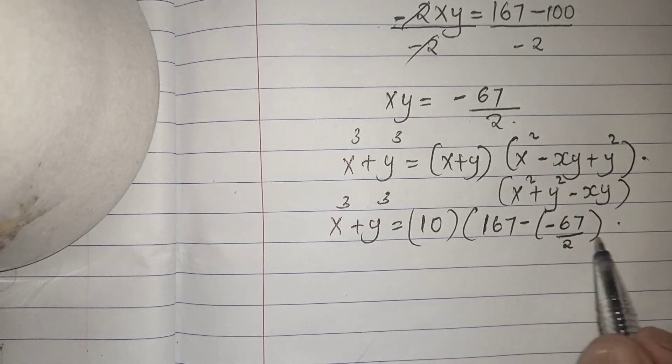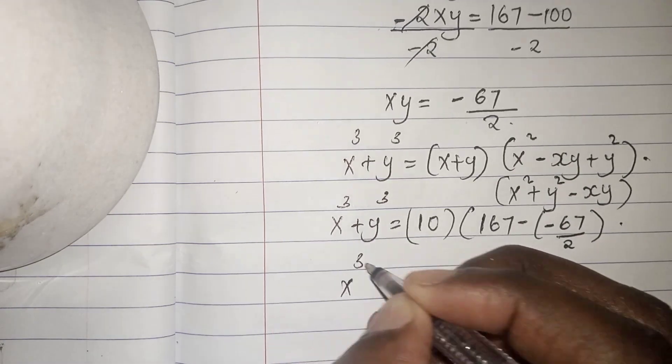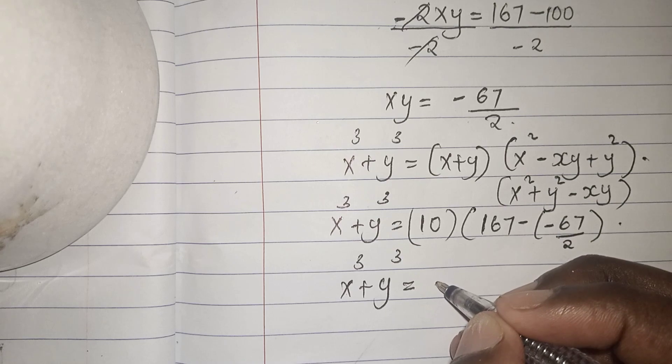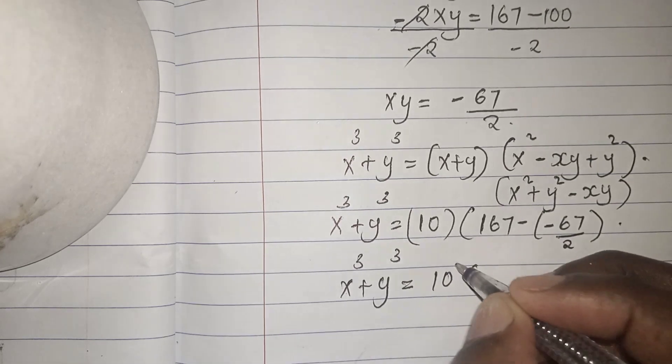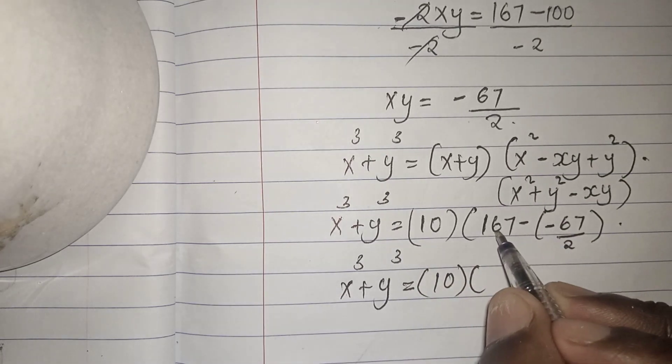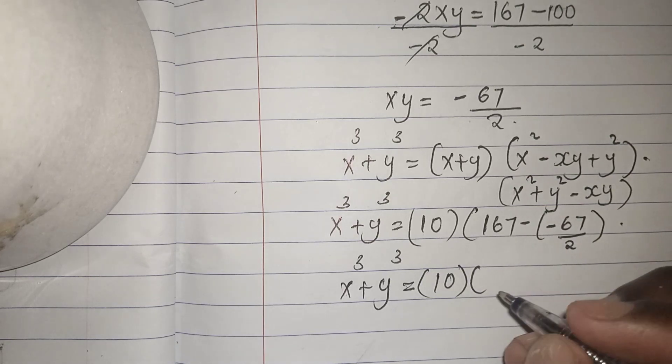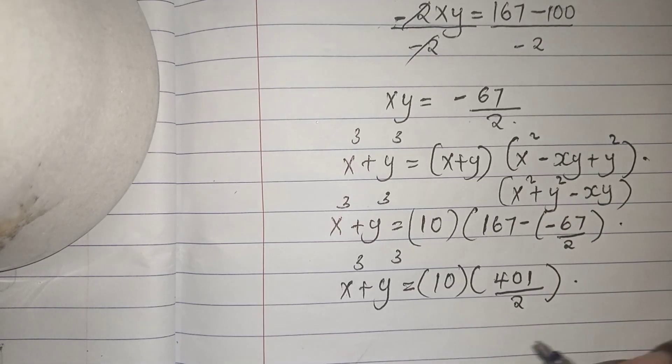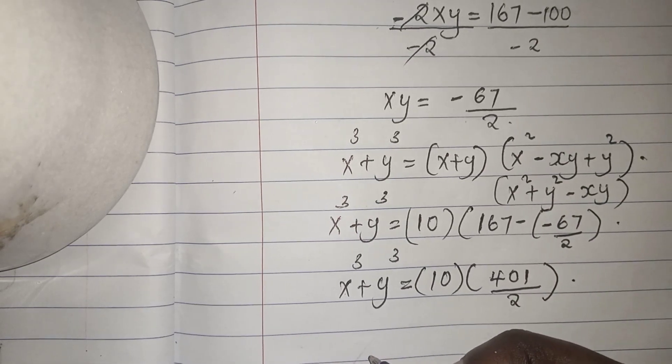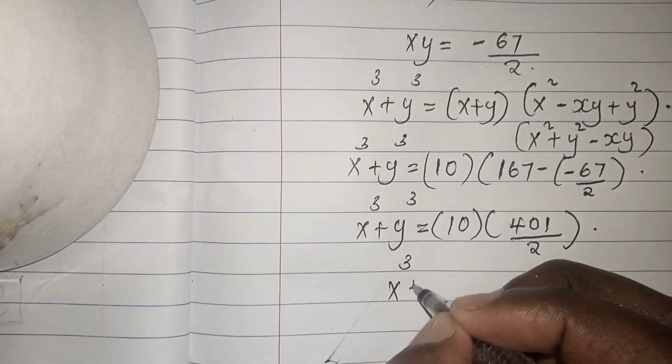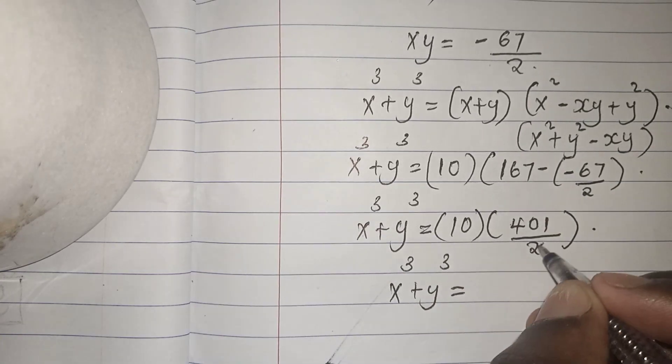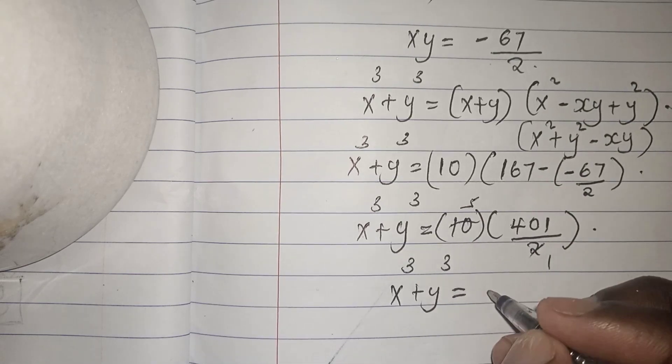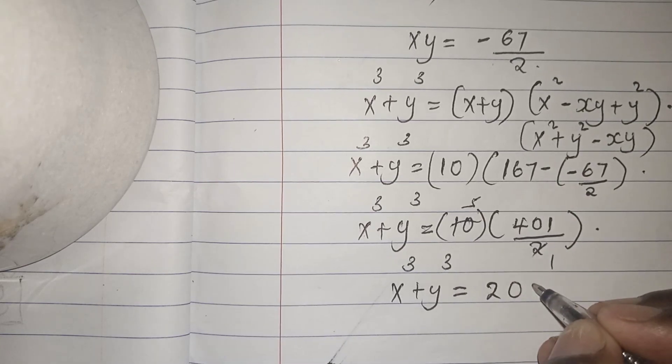Nice. So let us evaluate this. x cubed plus y cubed equals 10 into bracket. So if we evaluate this, this will give us 401 over 2. So the value of x cubed plus y cubed equals 2 here 1, 2 here 5. So 5 times 401 gives us 2,005.